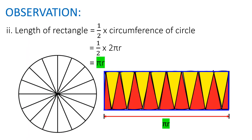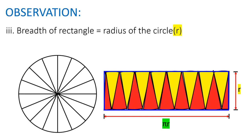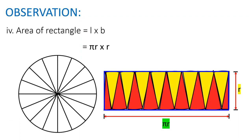Third observation, breadth of the rectangle is equal to radius of the circle. And fourth observation is area of rectangle is equal to length into breadth, which is equal to πr into r.